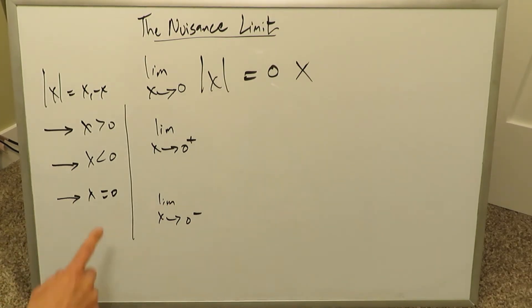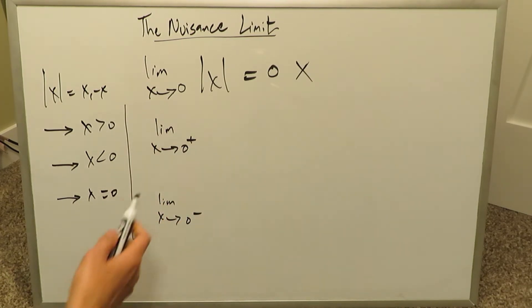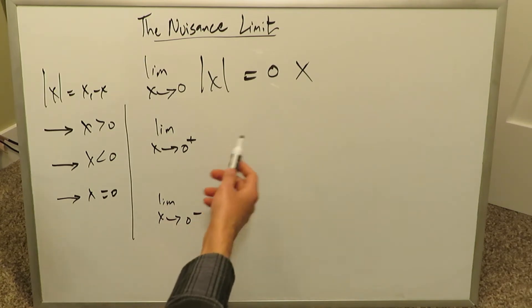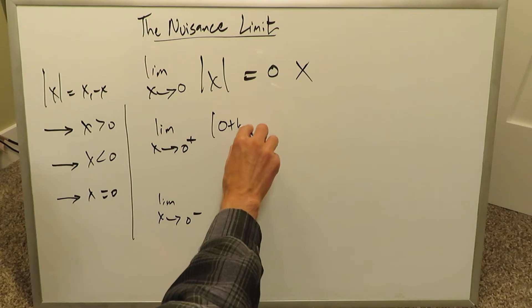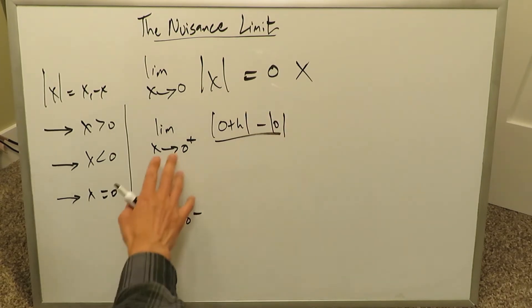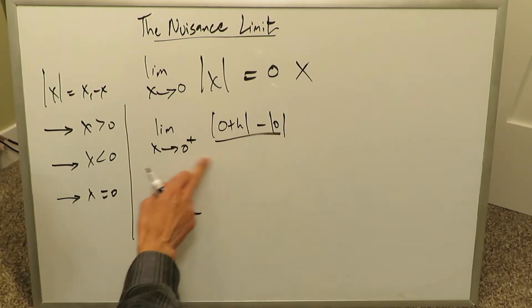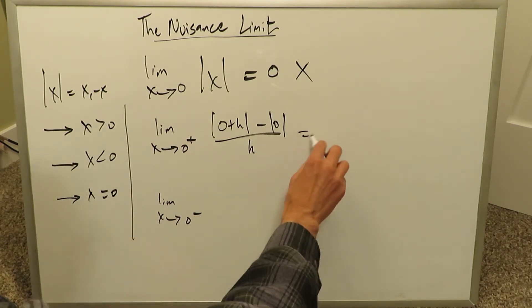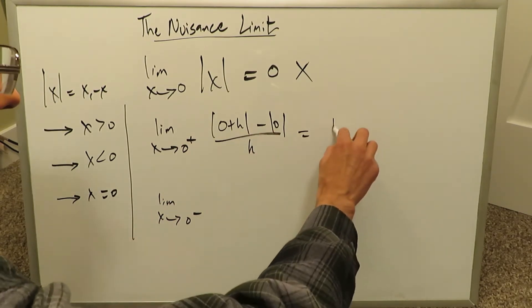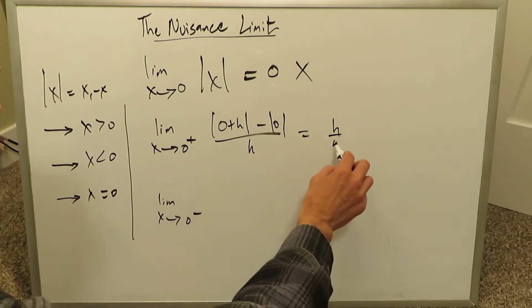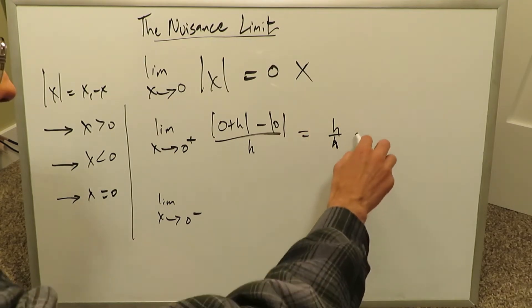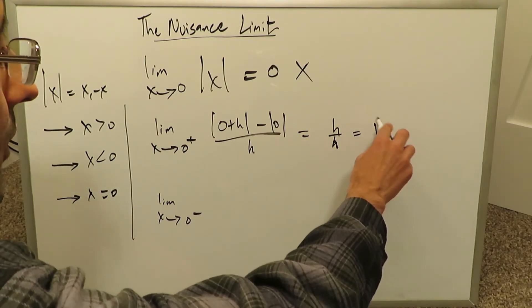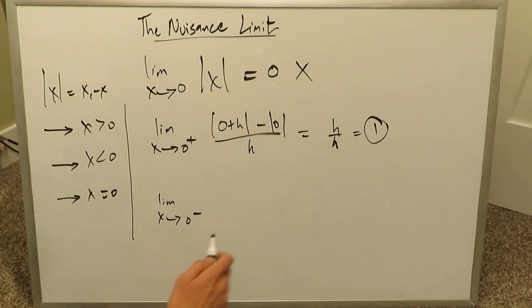When you examine x equal to 0 from the right and from the left, you put everything into the definition of the derivative with x equal to 0: absolute value of (0 plus h) minus absolute value of 0, all over h. Opening it up you get h over h. The limit as x approaches 0 from the right gives you 1.